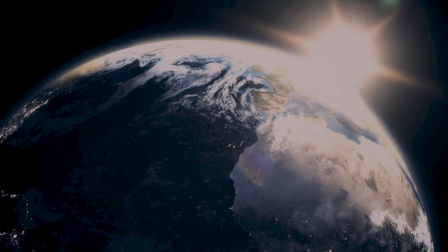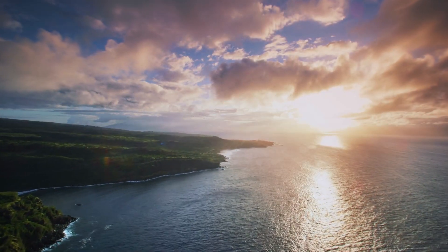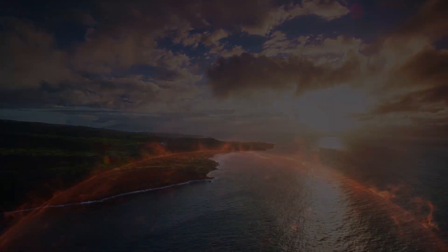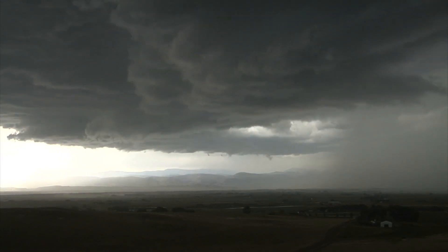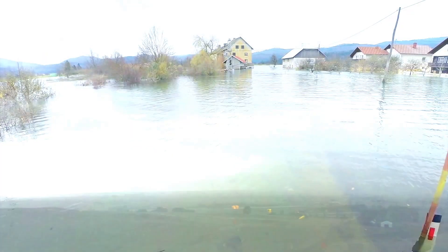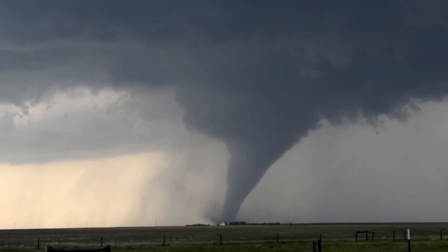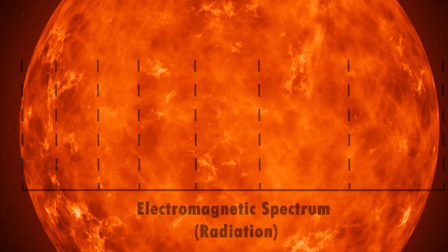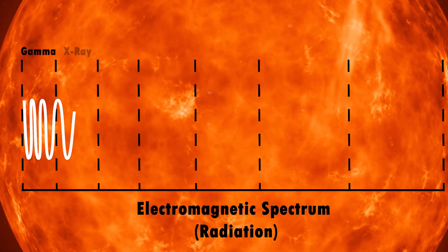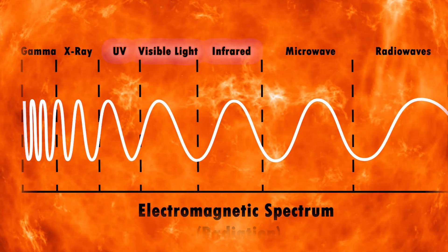The Sun — if it weren't for the energy we receive from the Sun, we wouldn't have weather. But how is something that's not even on our planet responsible for clouds, floods, blizzards, even tornadoes? Let's start at the beginning.